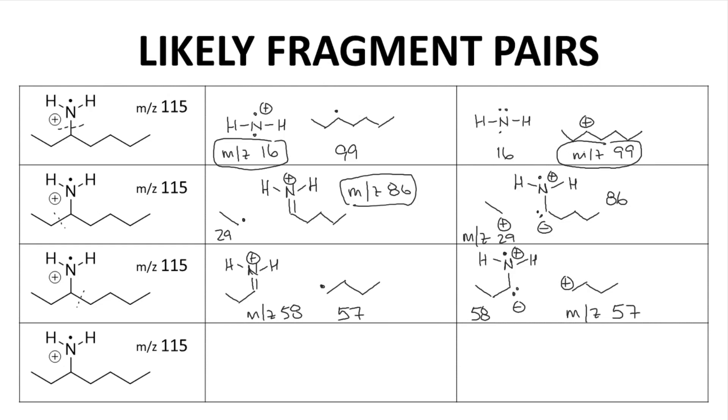Finally, we could break bond D, and we have to draw that in, that's our hydrogen. One way to break this would give a cation with a mass, an Mz value of 114. We would lose a hydrogen radical that has a mass of 1, it's unobserved.